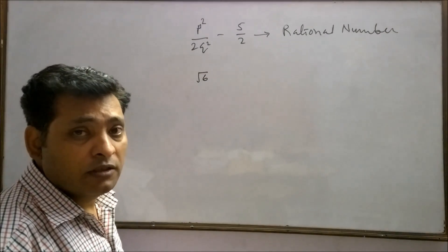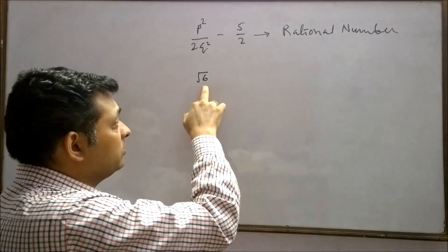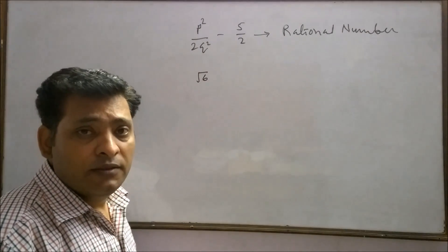Root 6 is an irrational number since 6 is not a perfect square of any rational number.